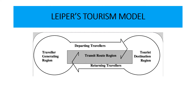Let us look very quickly at Leiper's tourism model. You may use your textbooks or other material to research the tourism model. This section here is known as the traveler generating region — in some books you may see the tourist generating region; it's the same thing. Over here is the tourist destination region. This section here is the TRR, the transit route region. The traveler generating region is known as the source market — this is where travel begins, where people book their tickets or research on places they want to visit, and where contact is made with the travel operators.